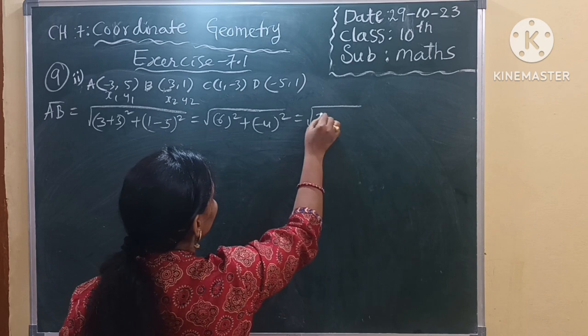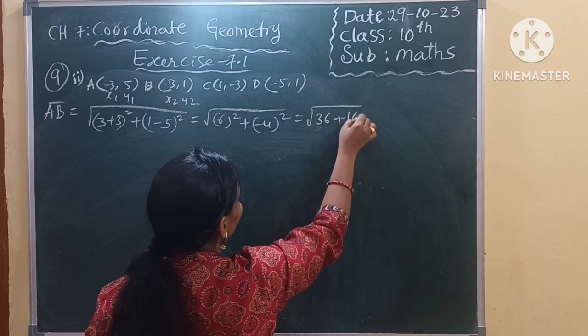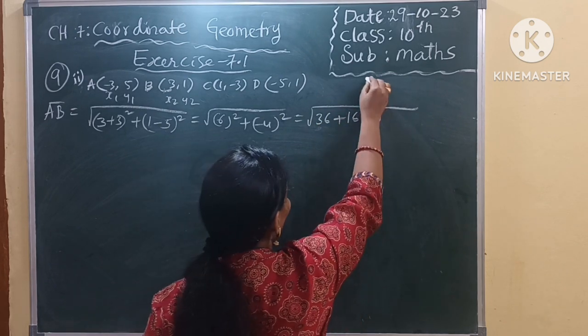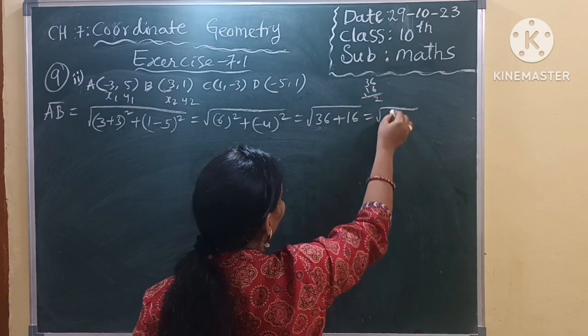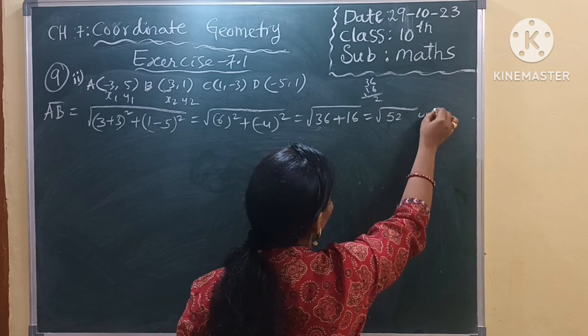So here 6 square is 36, 3 square is 16. Square root of if you add these 2 values 36 plus 16 is 52. Square root of 52 units.